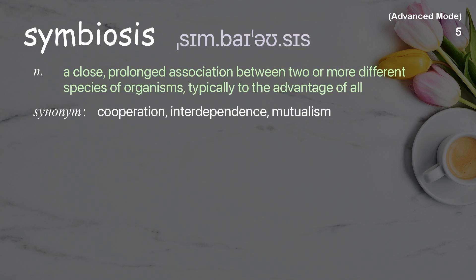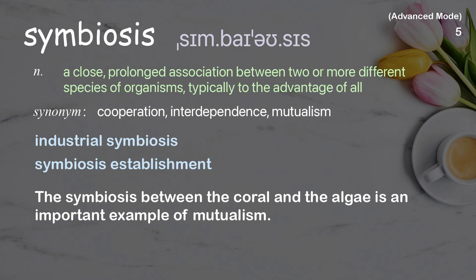Symbiosis: A close, prolonged association between two or more different species of organisms, typically to the advantage of all. Examples: Industrial symbiosis. Symbiosis establishment. The symbiosis between the coral and the algae is an important example of mutualism.